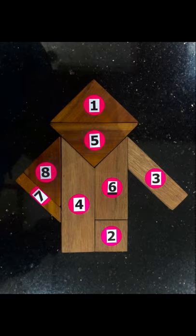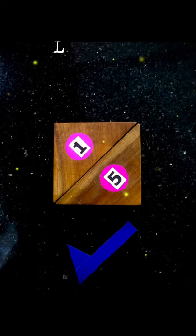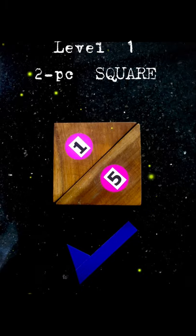Level one, letter A: choose two puzzle pieces that can be arranged to make a square. Level one, letter B: rearrange the chosen puzzle pieces from square to triangle.